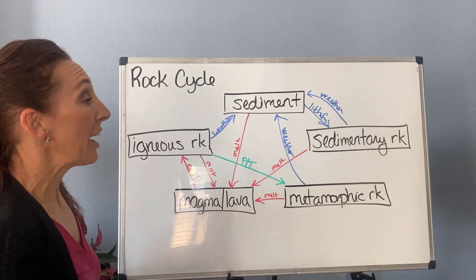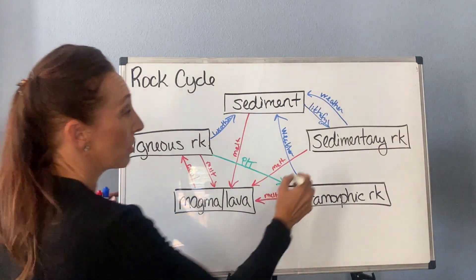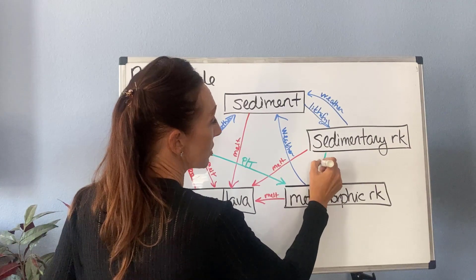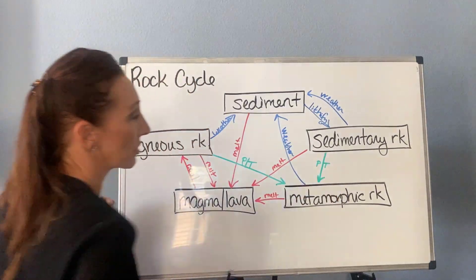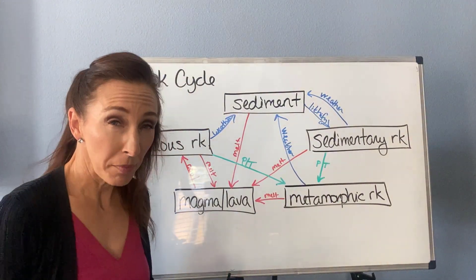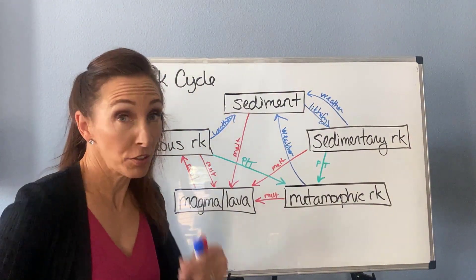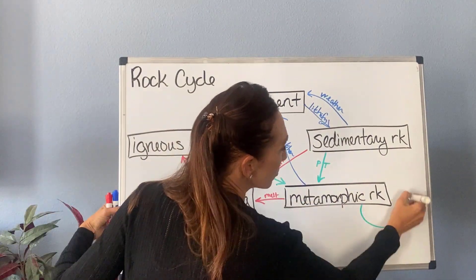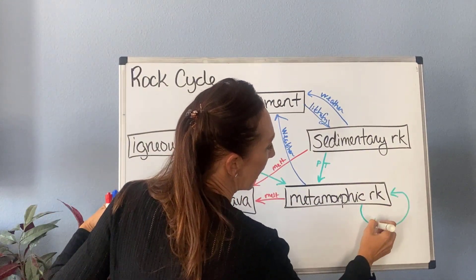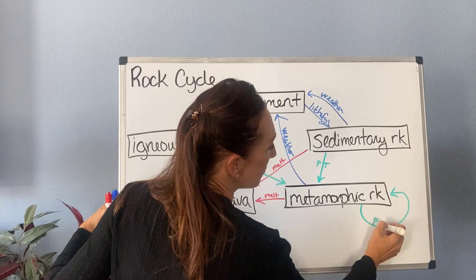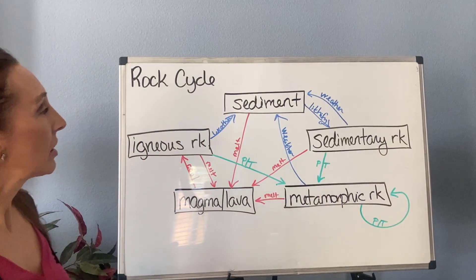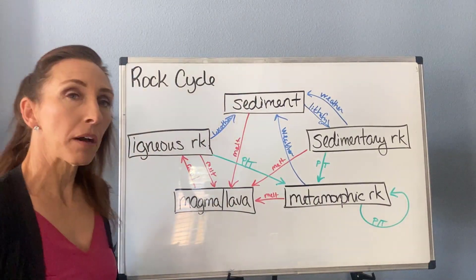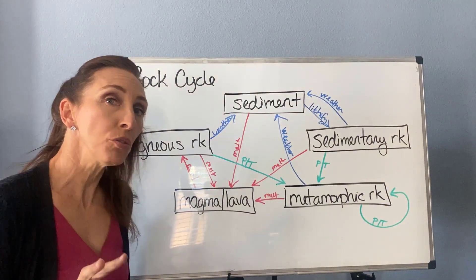You can also apply pressure and temperature to sedimentary rock and turn it into metamorphic rock. You can even make metamorphic rocks from other metamorphic rocks, so you can technically draw an arrow pointing to itself and label that pressure and temperature as well.